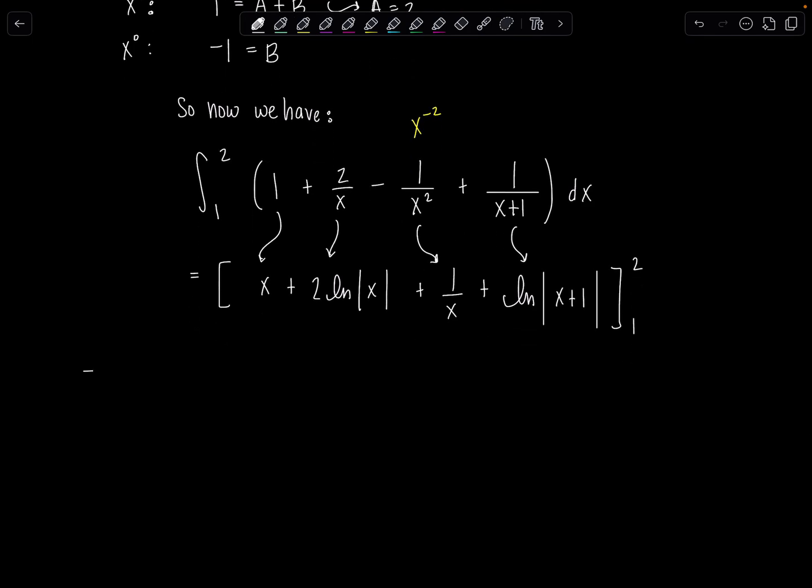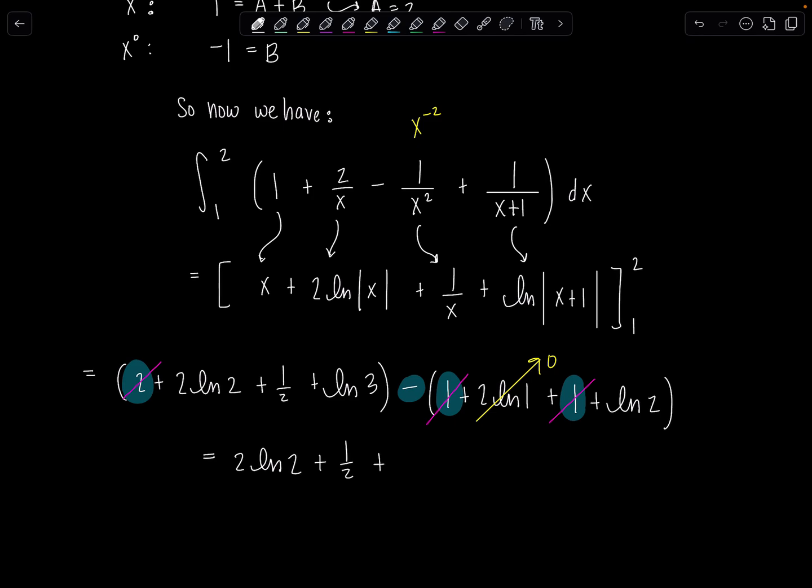So here we go. Upper limit minus lower limit. This will be 2 plus 2 natural log of 2 plus 1 half plus natural log of 2 plus 1, that's 3, minus now the lower limit 1 plus 2 natural log of 1 plus 1 over 1 is 1 plus natural log of 2. So let's see what's going on. We have natural log of 1, so this whole term is gone. This is 0. And then check this out. Here's positive 2, but here's negative 1 plus 1, which is negative 2. So those all cancel out. That's just gone. We don't have to fuss with those.